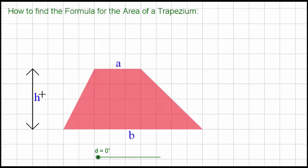The only other letter we use is h, which is the perpendicular height. It's not the sloped height, it has to be the perpendicular height of the trapezium.